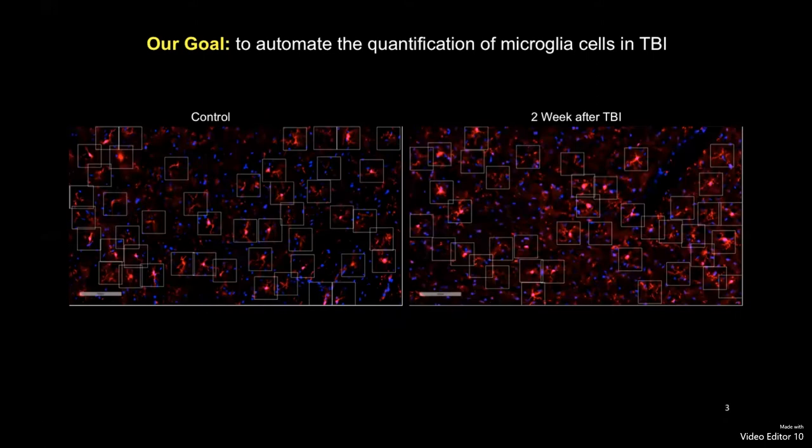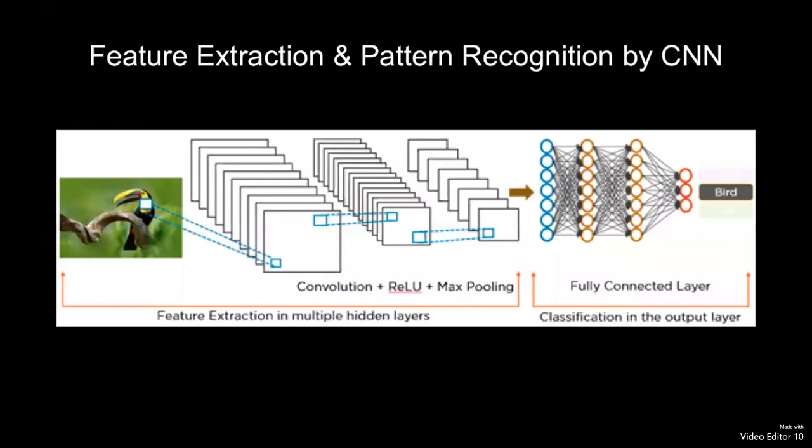Quantification of these histology images is usually very tedious and difficult. Our goal is to test if deep learning can help to automate the quantification of microglia cells for TBI.